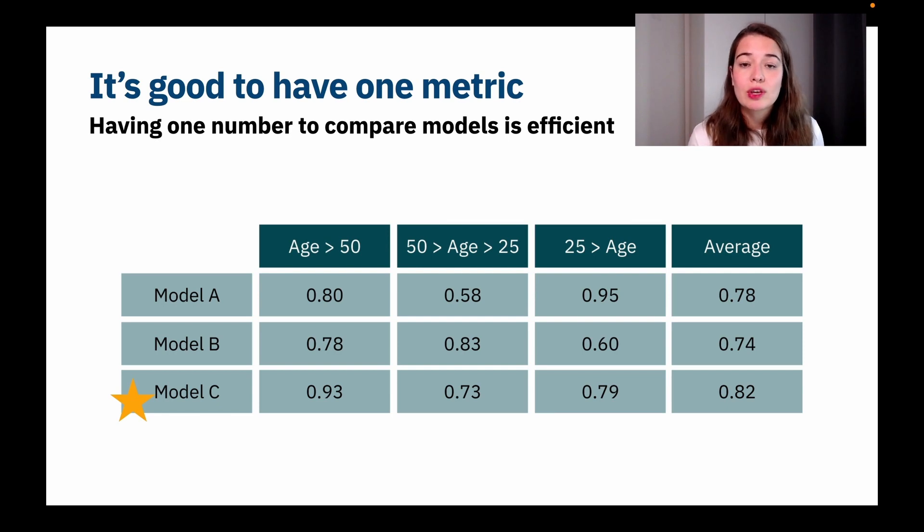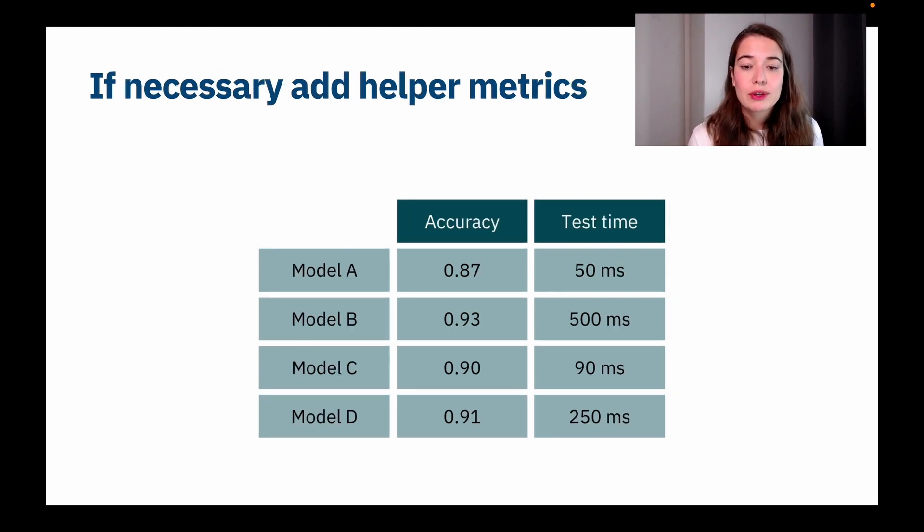But there are times sometimes that you cannot only use one metric and you're going to have to use more than one. So one example of that is, let's say you have a model that is predicting something and so you're calculating the accuracy. But at the same time, you're going to use this at a website or an app, and the model needs to predict things pretty quickly. Otherwise, the app is going to halt or people are not going to have a great user experience. So what you can do is to say, okay...